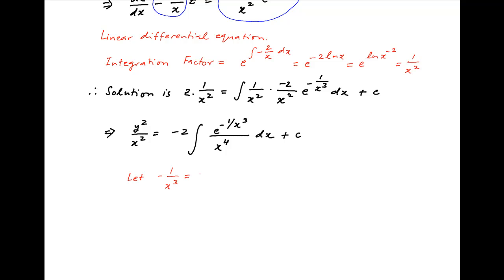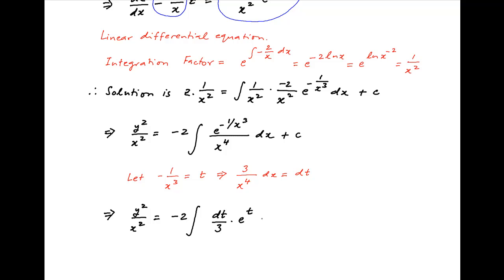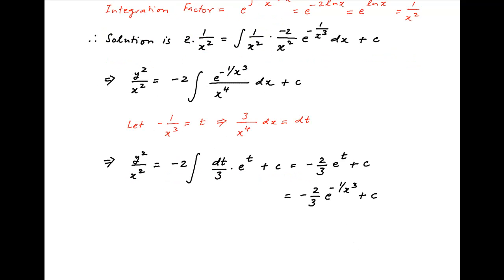To evaluate the integral on the right hand side, let minus 1 upon x cube be equal to t. Taking the derivative of both sides, we get 3 upon x raised to the power 4 dx is equal to dt. Using this, the above solution becomes y square upon x square is equal to minus 2 times the integral of 1 upon 3 times e raised to the power t dt plus the constant of integration. The right hand side is equal to minus 2 upon 3 times e raised to the power t plus c. Substituting t equal to minus 1 upon x cube, this is equal to minus 2 upon 3 times e raised to the power minus 1 upon x cube plus c.